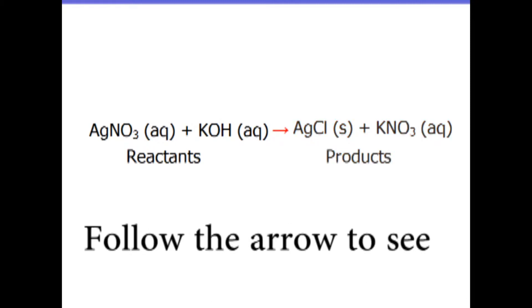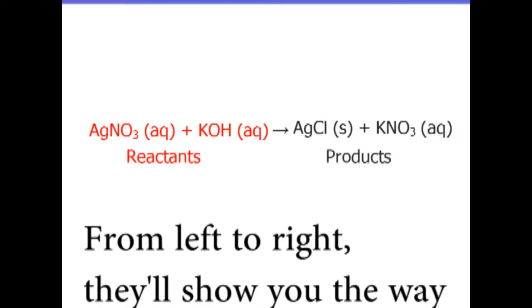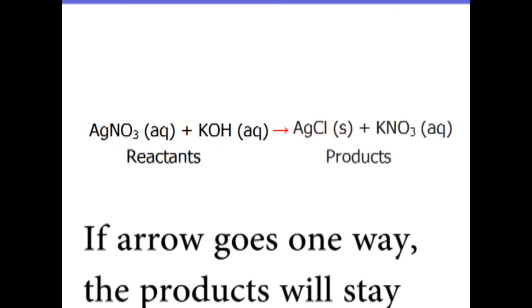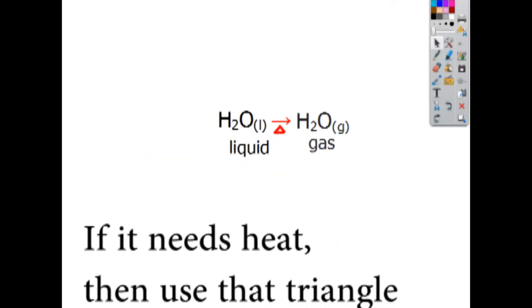Through the arrow, they see the reactions that are actually proceeding from left to right. They show you the way products are producing in reactions today. If the arrow goes one way, the products will stay. If it goes both, it will sag. If it needs heat,